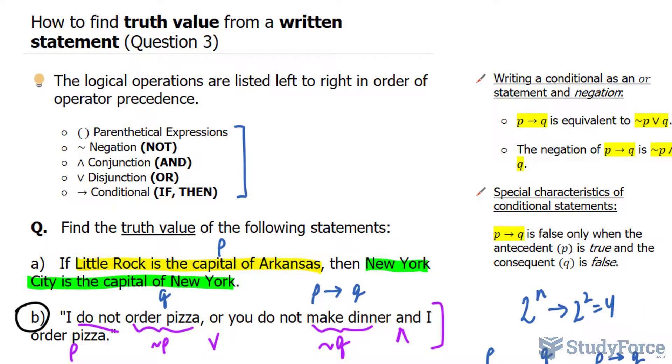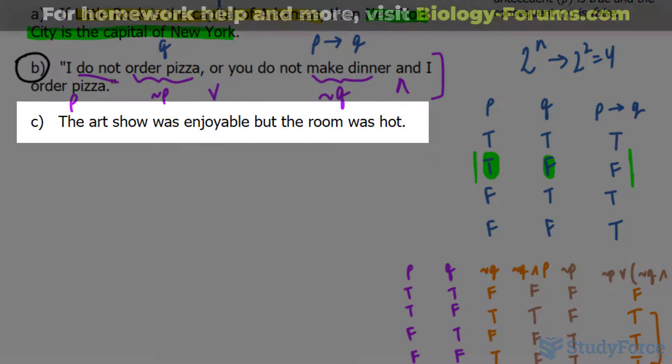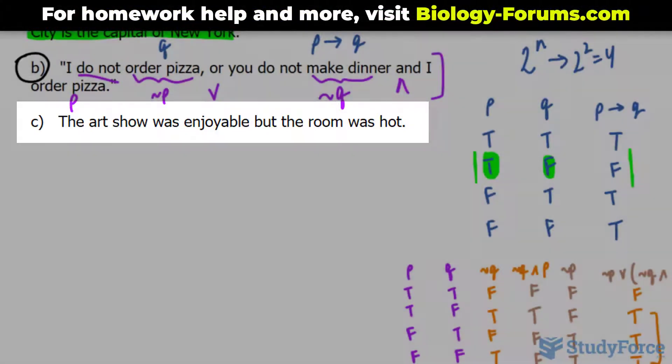In our final example in this series where we find the truth value from a written statement, we ended off with question C where it reads: the art show was enjoyable, but the room was hot.